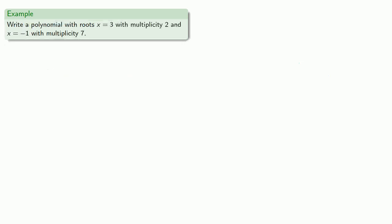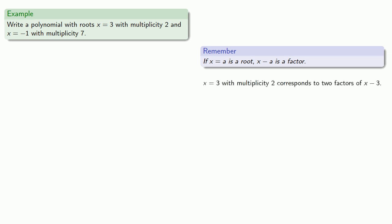And again, we can also incorporate the multiplicity into the roots, so let's try and write a polynomial with roots x equals 3 with multiplicity 2 and x equals negative 1 with multiplicity 7. Remember, if x equals a is a root, then x minus a is a factor. x equals 3 with multiplicity 2 corresponds to two factors of x minus 3, so we can include them as x minus 3 to the second power.